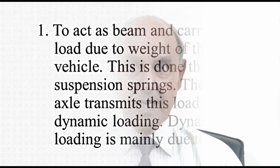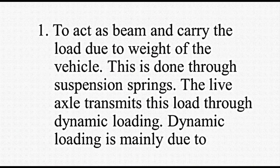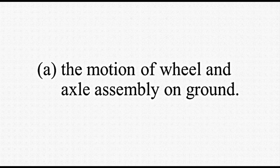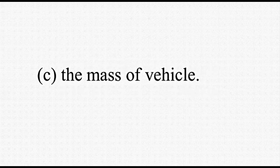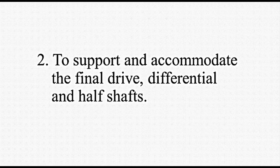The functions of the casing are: number 1, to act as a beam and carry the load due to weight of the vehicle. This is done through suspension springs. The Live Axle transmits this load through dynamic loading. Dynamic loading is mainly due to: a) the motion of wheel and axle assembly on ground, b) flexibility of tires and suspension system, and c) the mass of vehicle. The second function of casing is to support and accommodate the final drive differential and half shafts. The middle portion of casing is spherical in shape to accommodate the final drive and differential.